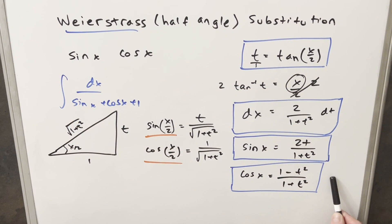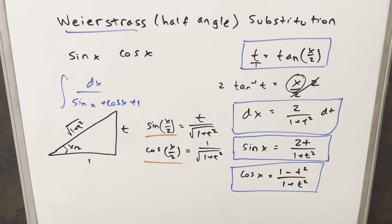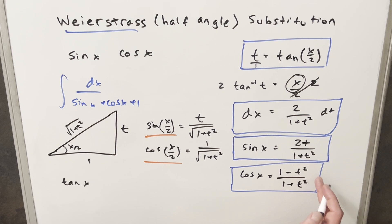And now with everything that we found boxed over here in blue, we've got everything we need to do this substitution for sine x and cosine x. Now, of course, if your integral had a tangent or other things, we can just derive them from these. Like if we wanted to find tan x, we would just divide sine x and cosine x. And that would be just 2t over 1 minus t squared.